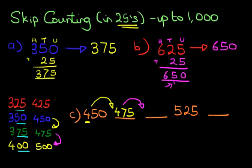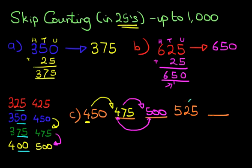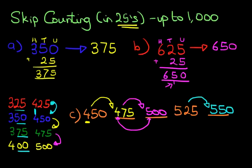And lastly, we've got 525. What does that become? Have a look: 25 becomes 50, and the 5 remains the same. So the answer is 550. Once you've learned the sequence of adding 25s, everything else is very simple. You can count in 25s up to 1,000 very, very easily.